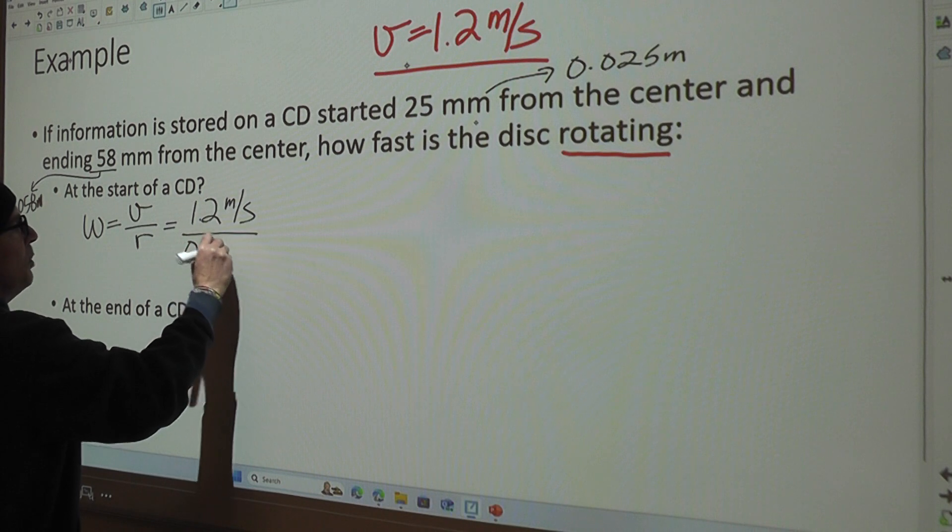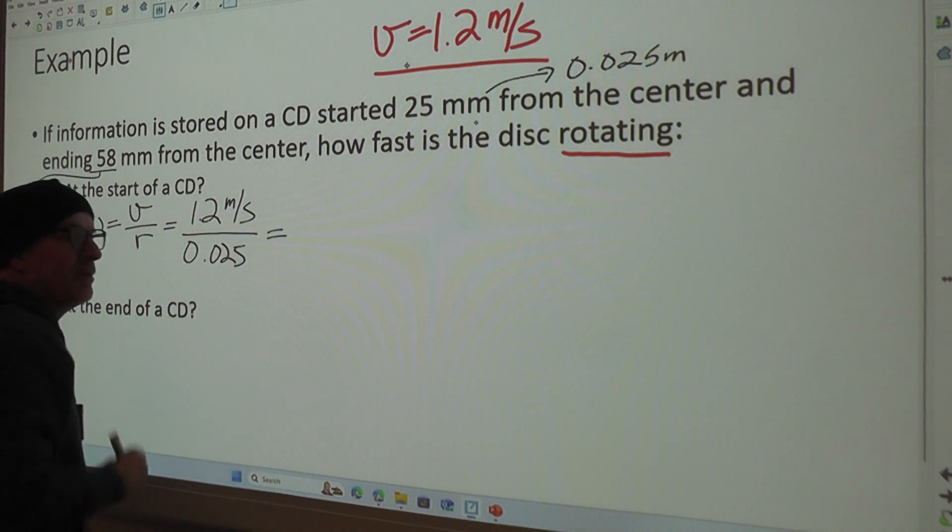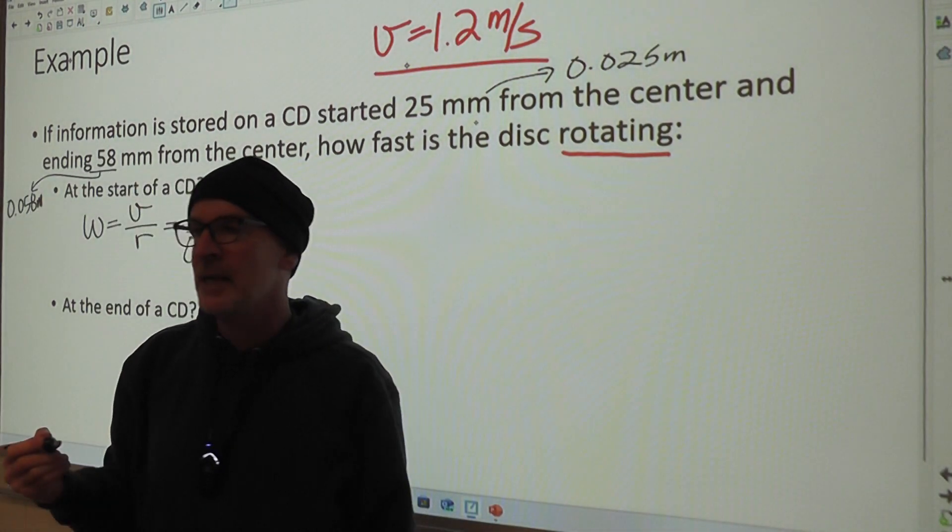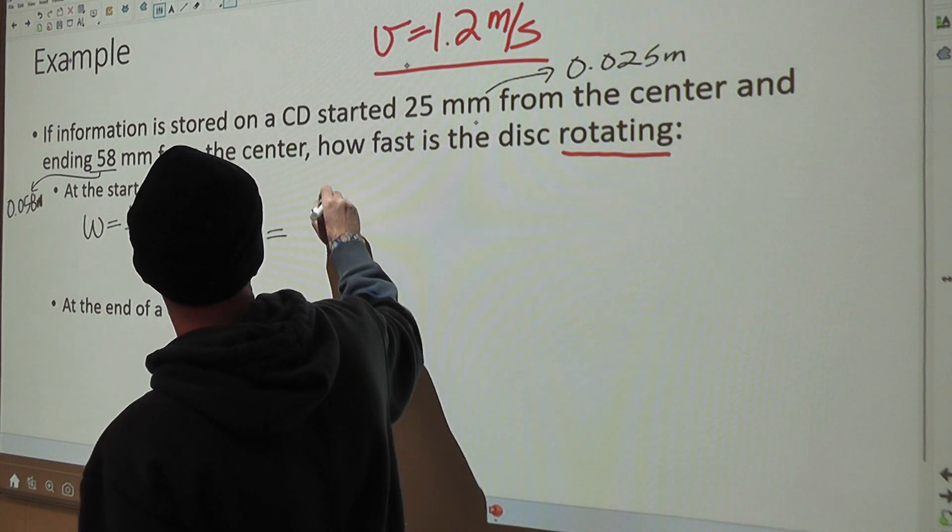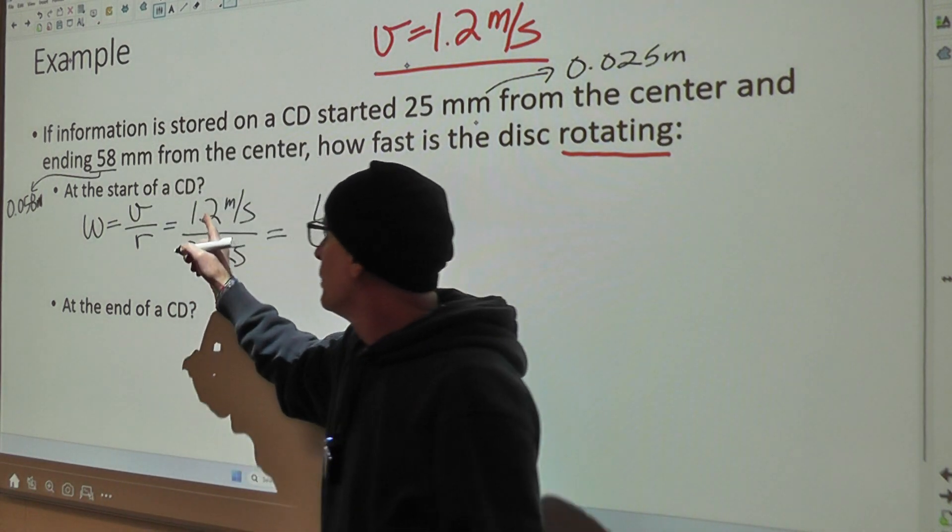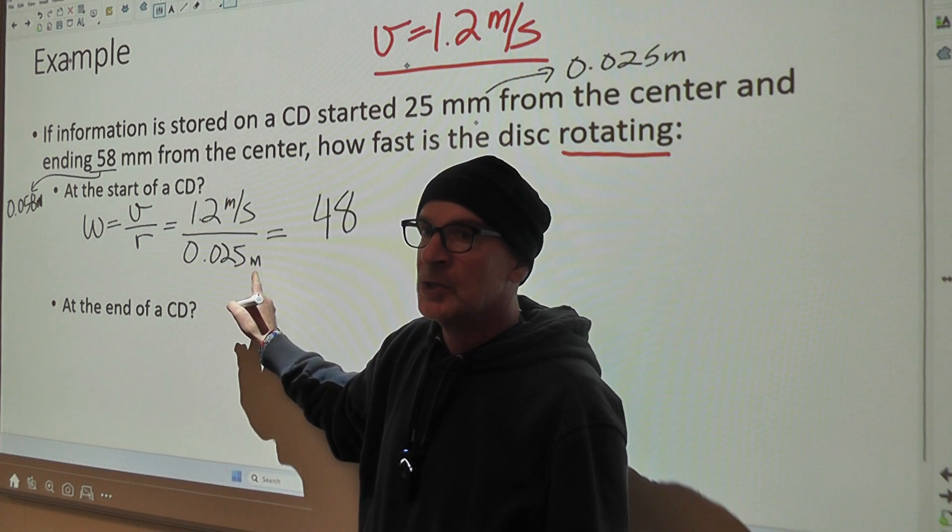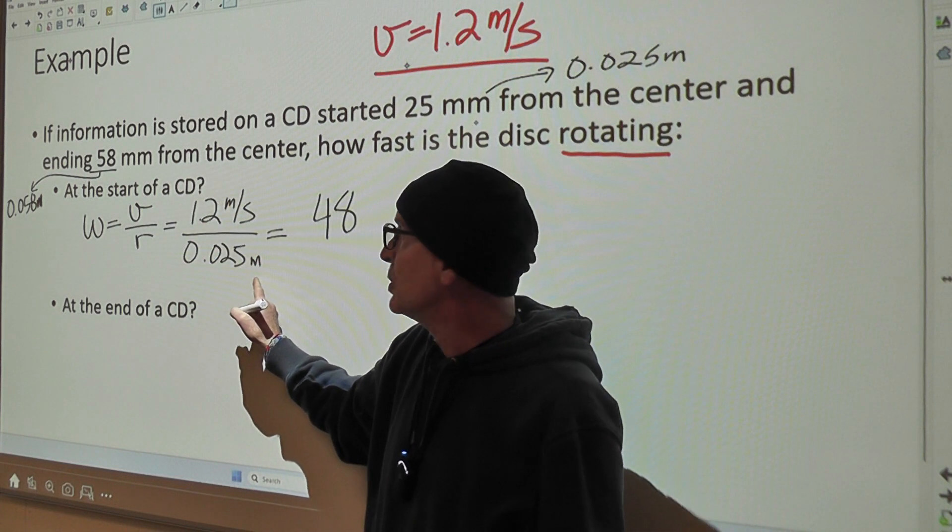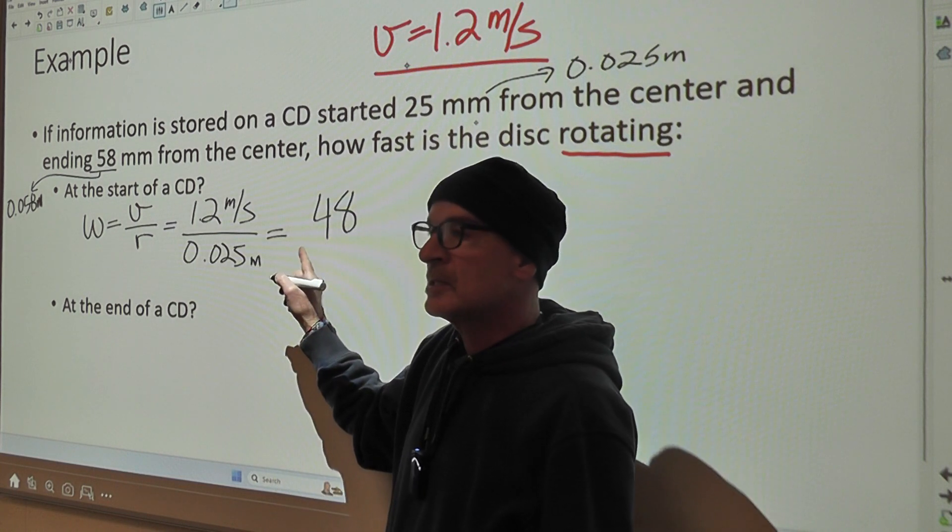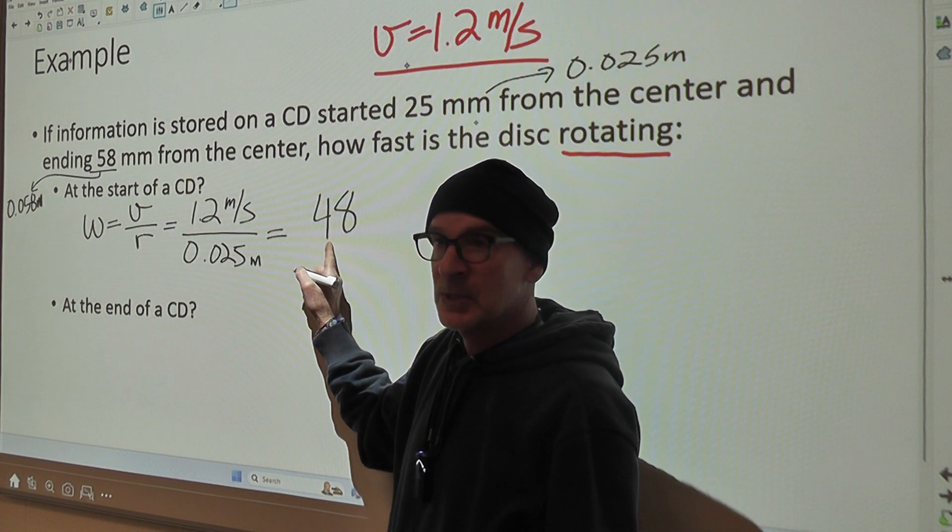So divided by 0.025 will give us an initial angular velocity of, I think, 48, and this is meters, so this would be meters per second divided by meters, which leaves us with the unit of per meters, or per seconds, sorry. So this would be 48 per second.